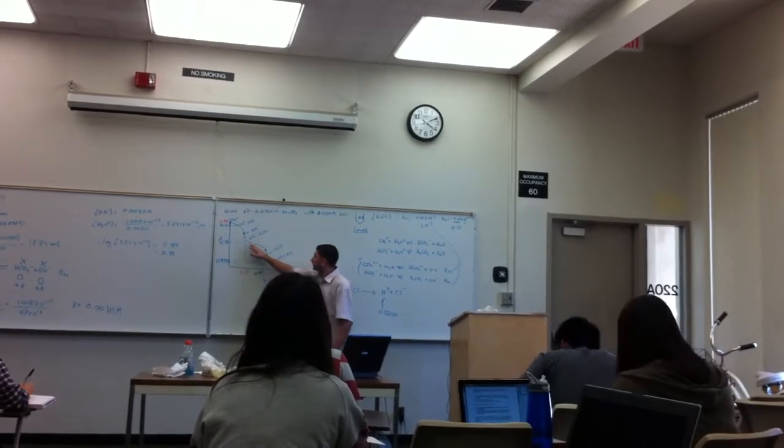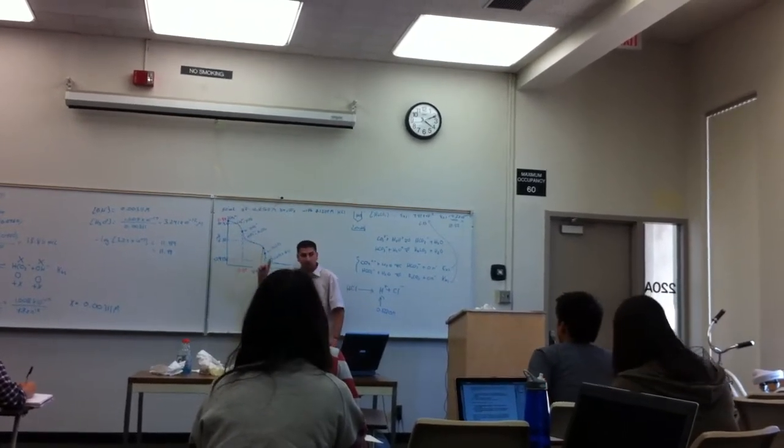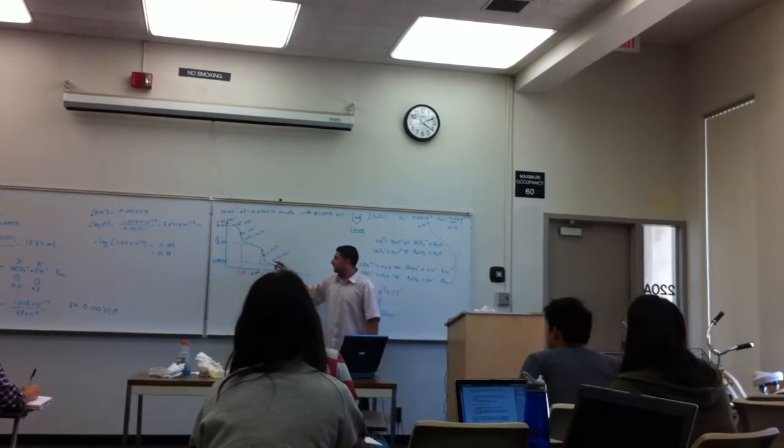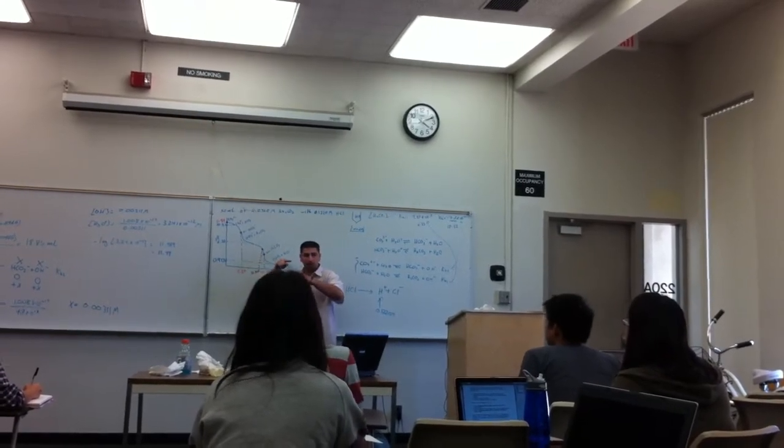Acidic. Because if you look at this, we passed a 6.35. That was the point, by the way, of doing the Henderson, is to see how far are you from the equivalence point.